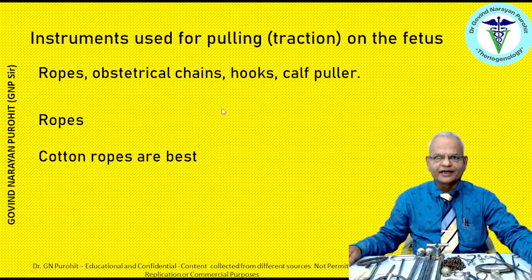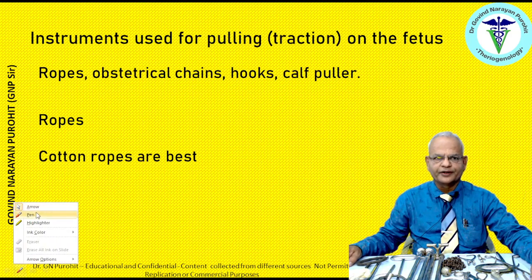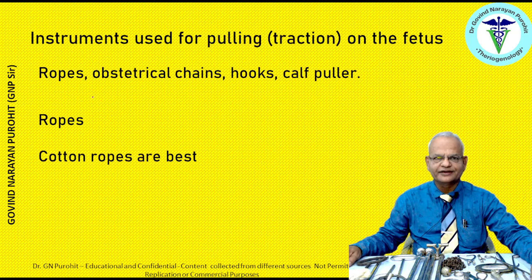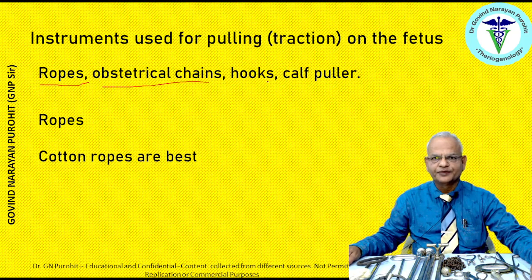Now, instruments used for pulling or traction on the fetus include: first, your hand — already discussed — then ropes, obstetric chains, hooks, and lastly the calf puller.